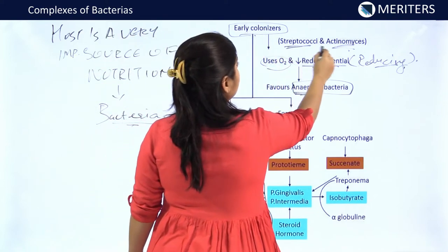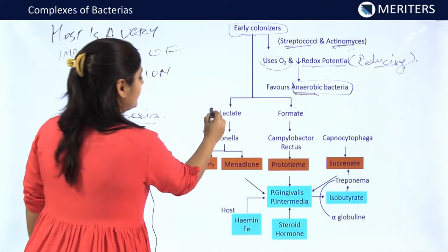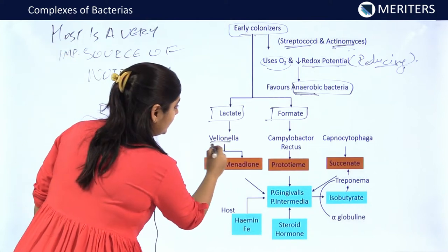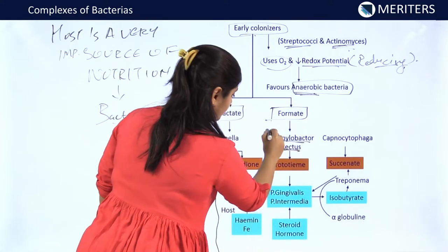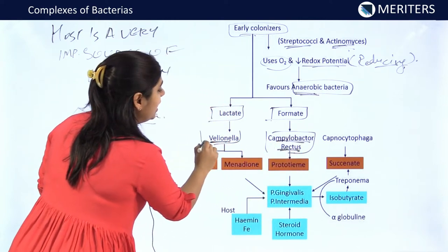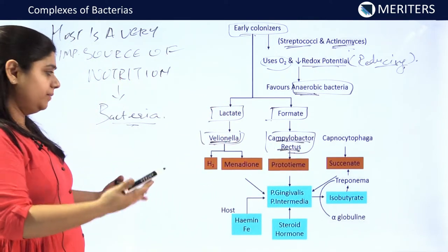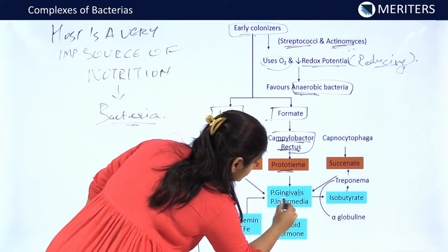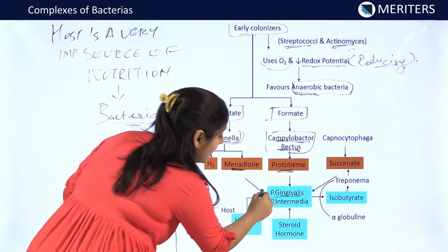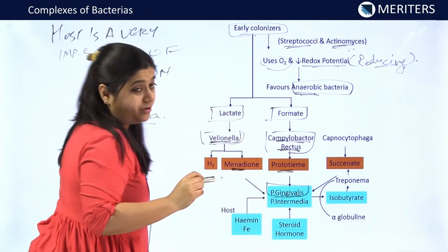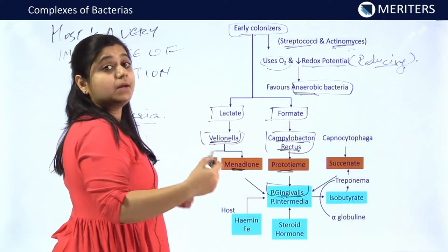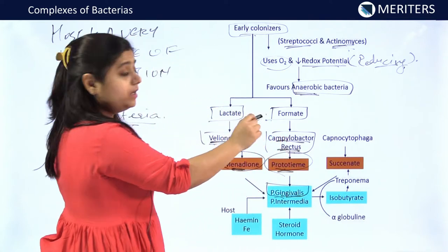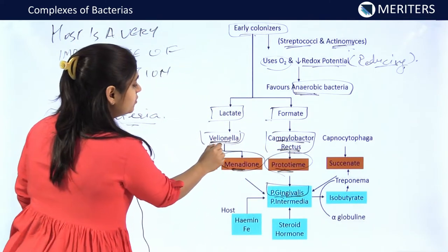Apart from this, streptococci and actinomyces produce metabolic products like lactic acid and formic acid, over which the secondary colonizers Veillonella and Campylobacter rectus survive. These Veillonella and Campylobacter rectus produce protoheme and menadione, which are important for the survival of Porphyromonas gingivalis — a key bacteria of the red complex and very important for causing periodontitis.